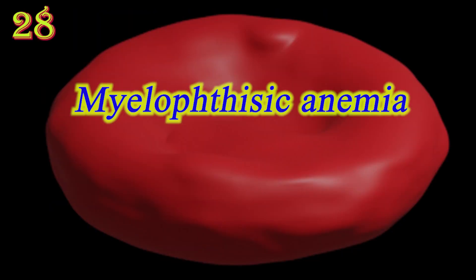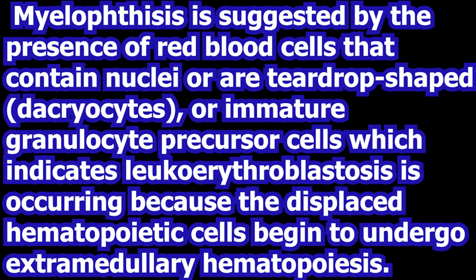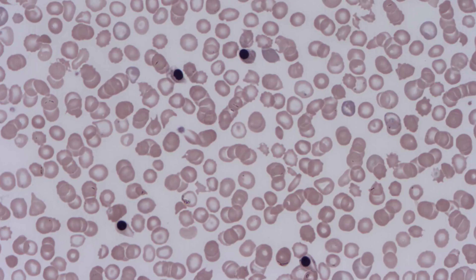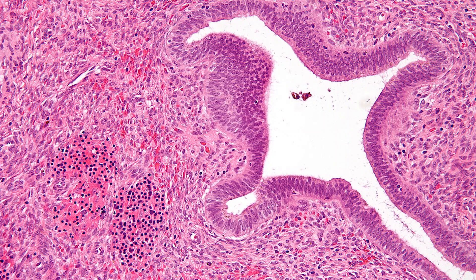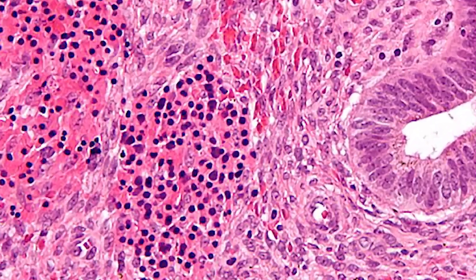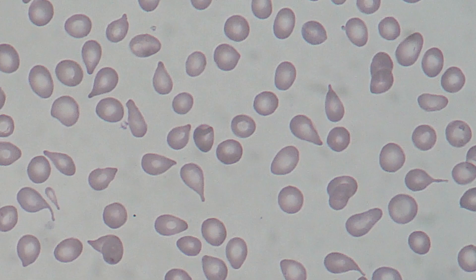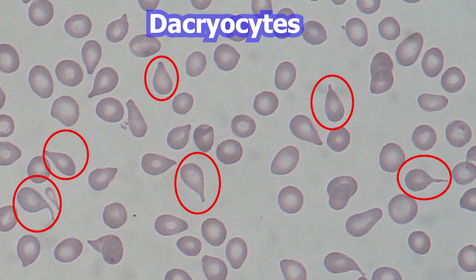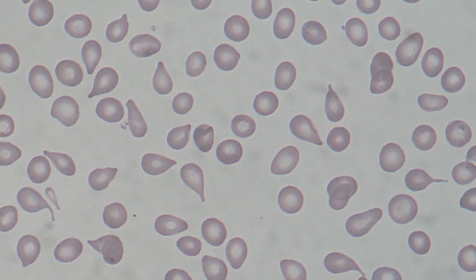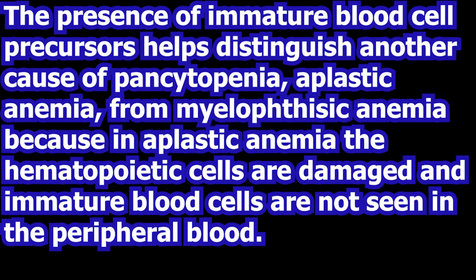Myelophthisic anemia is a severe type of anemia referring to the displacement of hematopoietic bone marrow tissue by fibrosis, tumors, or granulomas. The presence of nucleated RBCs, teardrop-shaped dacrocytes, or immature granulocyte precursor cells in the peripheral smear indicates leukoerythroblastosis, occurring because displaced hematopoietic cells begin to undergo extramedullary hematopoiesis.